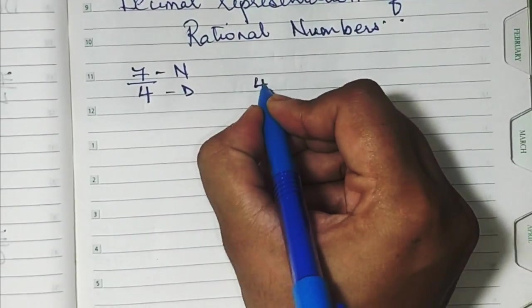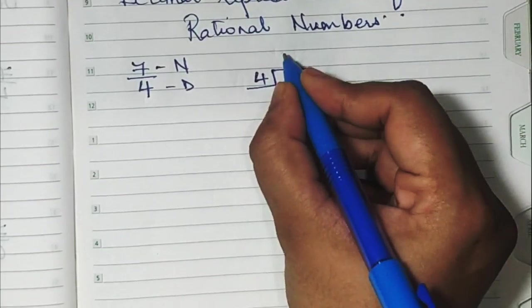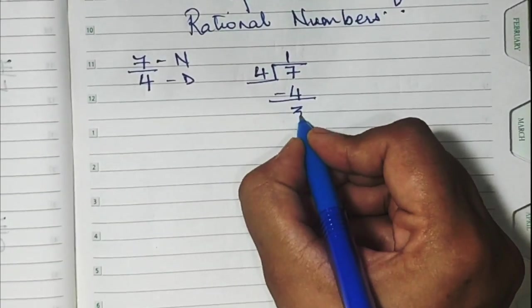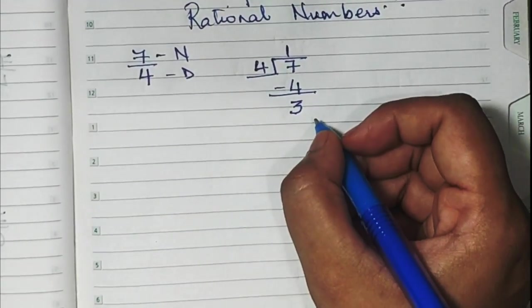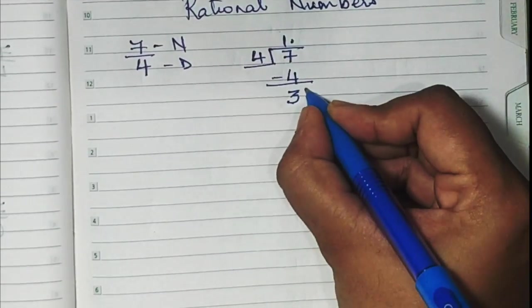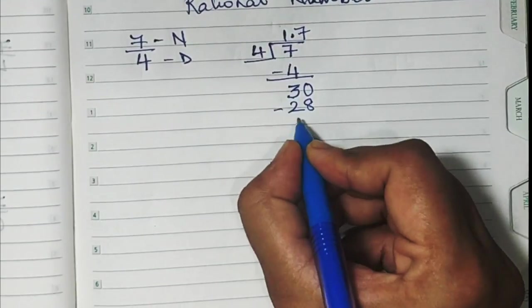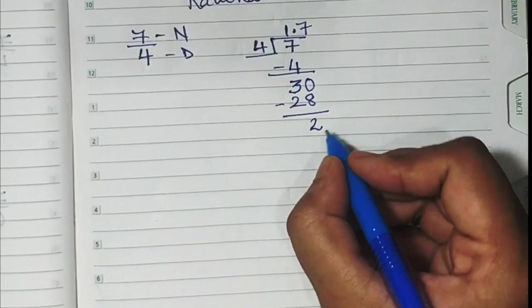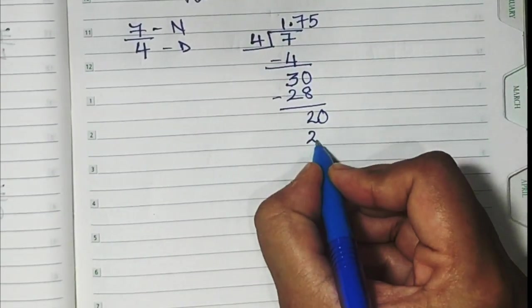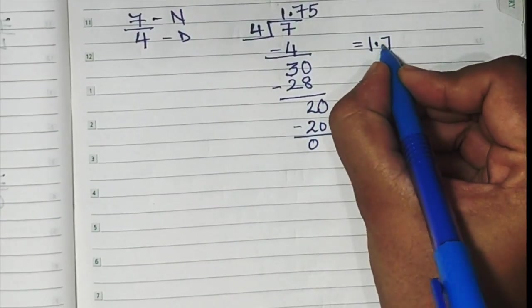Let us divide and find out. You have 7 which you want to divide by 4. 4 ones are 4, 3 remains down. Then what you have over here is 4, take a point over here, take a 0. 4 sevens are 28, you have 2 which remains down. Take a 0 here, 4 fives are 20, remainder 0. Your answer over here is 1.75.